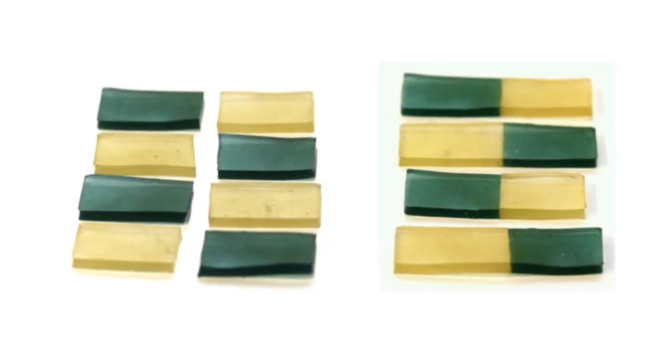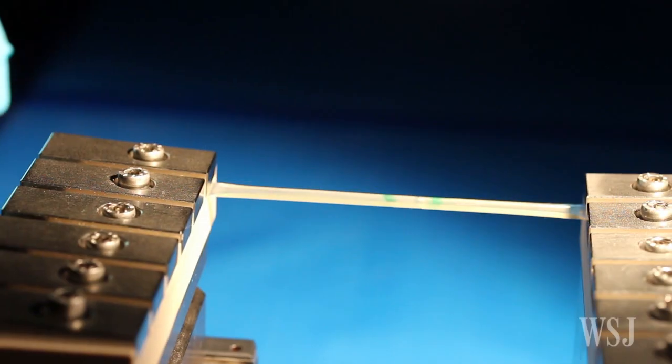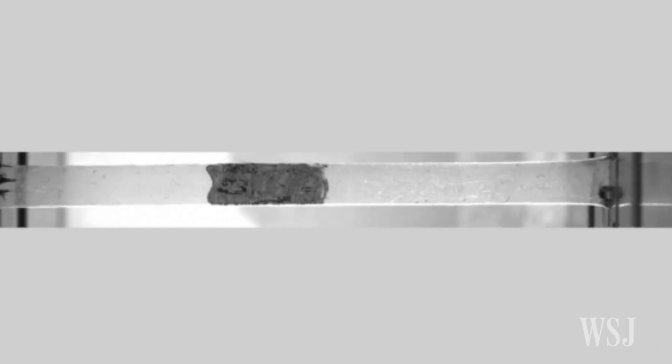Heating the material to 212 degrees Fahrenheit shortly after the cut made the rubber heal even faster. And after eight days, the rubber was capable of withstanding stress equivalent to 20 times the normal amount of pressure on a tire.